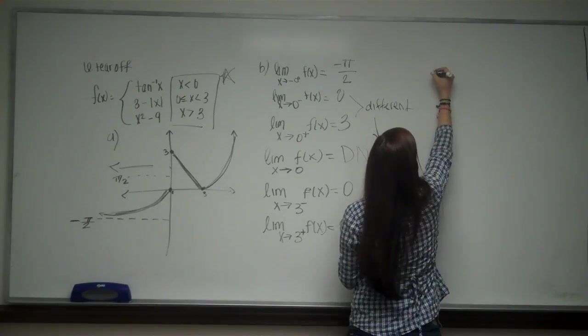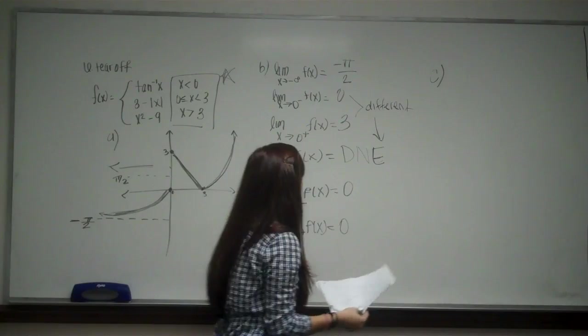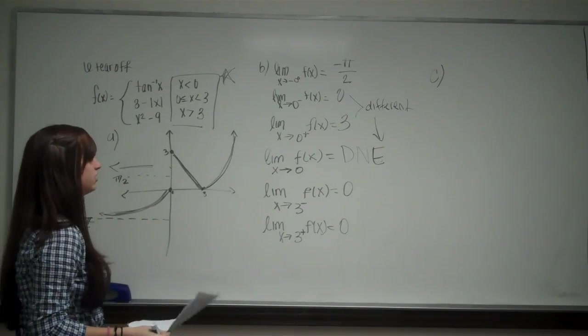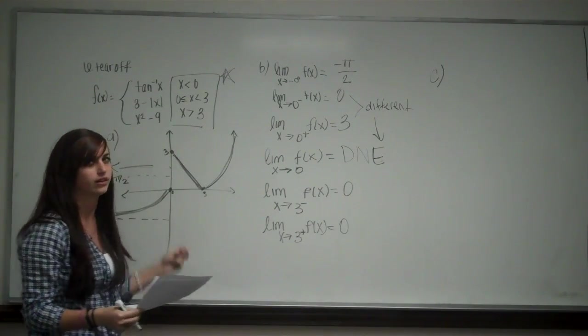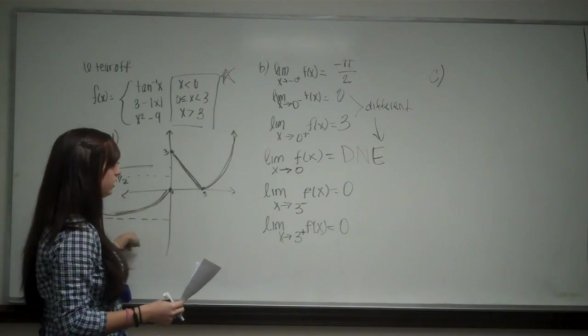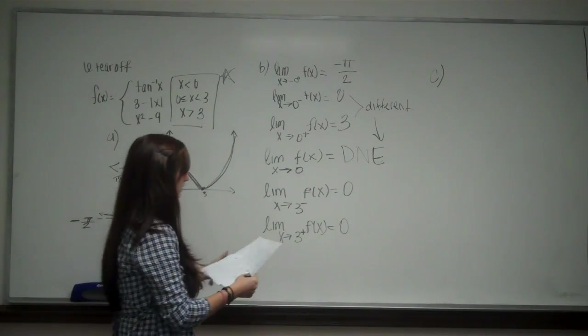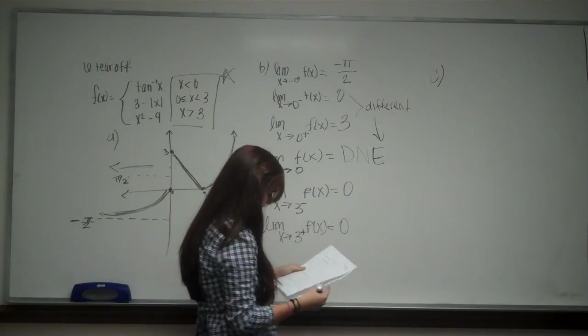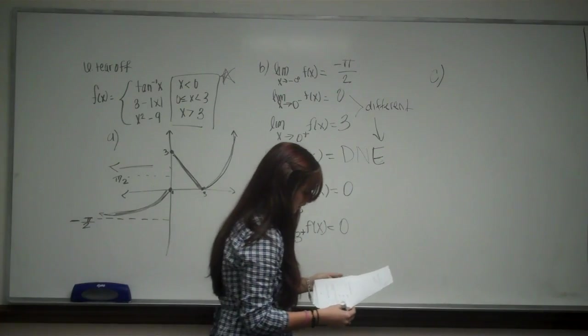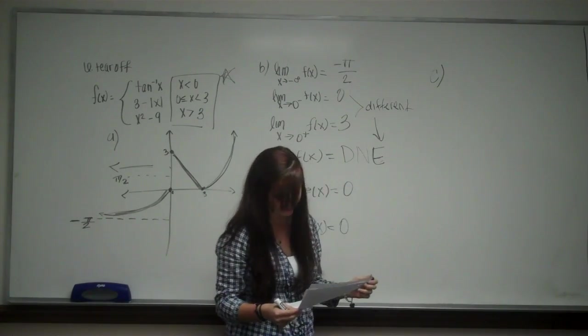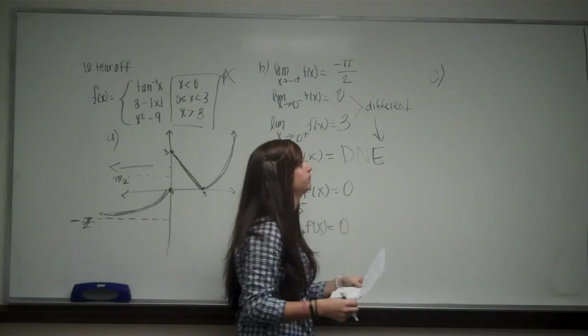Now C. So that's why I said the graphing is the hard part because after that you would just look at your graph. I mean you can look at your equations, but I think it would be easier to look at your graph to find the limits. So part C says list all the discontinuities of f of x and see whether they are jump, infinite, or asymptote.